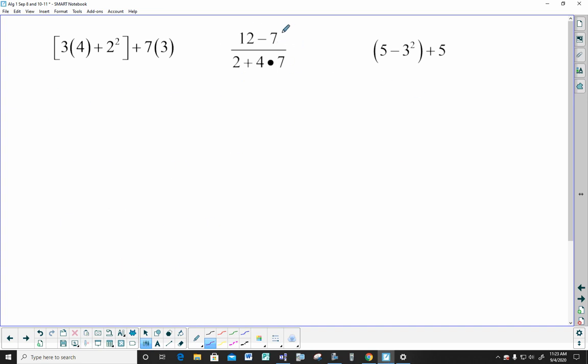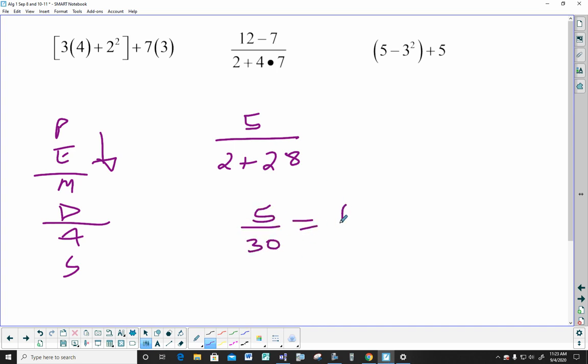When you have a fraction, take care of business on top and take care of business on the bottom separately, following the same rules for PEMDAS. The only thing I have going on here is subtraction, so the top becomes 5. Now I have to do this multiplication before I can do that addition. So PEMDAS, I'm working down it. I have to take care of multiplying or dividing before I can take care of that addition. So I have 2 plus 4 times 7, which is 28. So I have 5 over 30, and of course you've got to reduce this to 1 over 6.